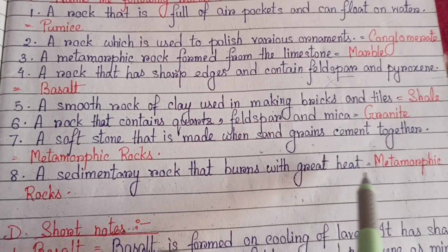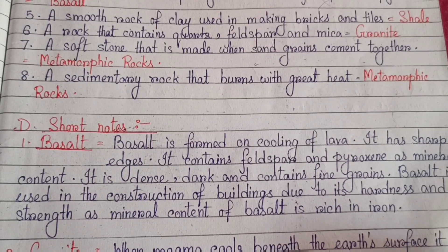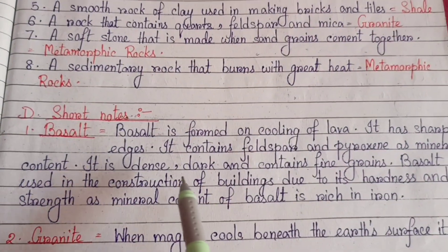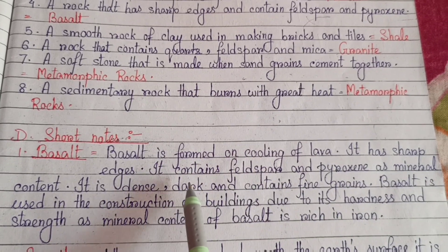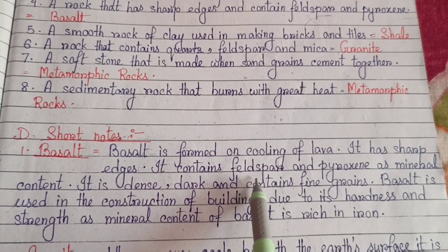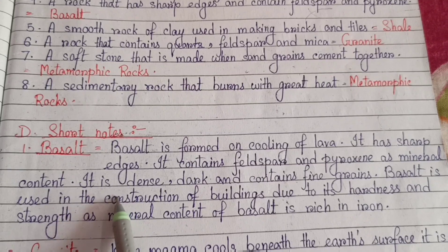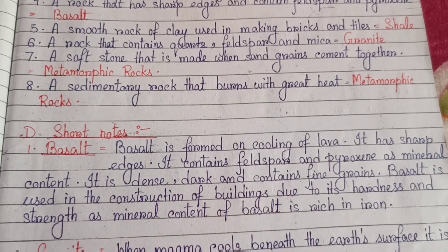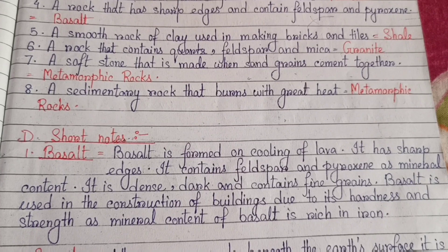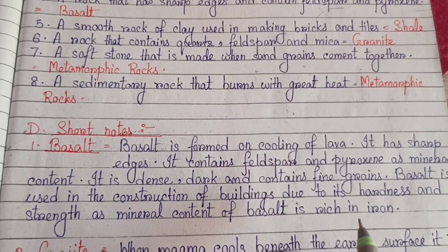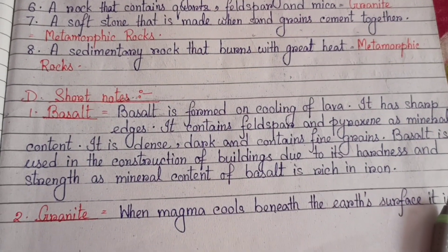Number seven: a soft stone that is made with sand grains cemented together — sandstone. Number eight: a sedimentary rock that bonds with great heat — metamorphic rock. Next, Section D: Short Notes. Basalt — basalt is formed on cooling of lava. It has sharp edges and contains feldspar and pyroxene as mineral content. It is dense, dark and contains fine grains. Basalt is used in the construction of buildings due to its hardness and strength.